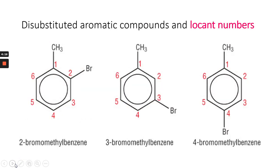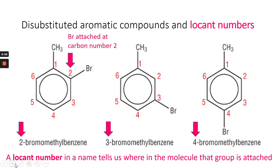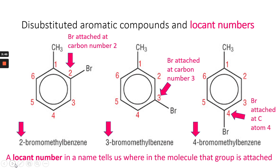Let's have a look at some disubstituted examples. This brings in the need for locant numbers. A locant number tells you whereabouts on the ring the substituent is put — it tells us where and what the group is attached. For example, for 2-bromomethylbenzene, 3-bromomethylbenzene, and 4-bromomethylbenzene, you have the bromine attached at carbon number 2, carbon number 3, and carbon number 4 respectively. The basic aromatic ring here is a methylbenzene template, and we're attaching bromine as a second substituent.